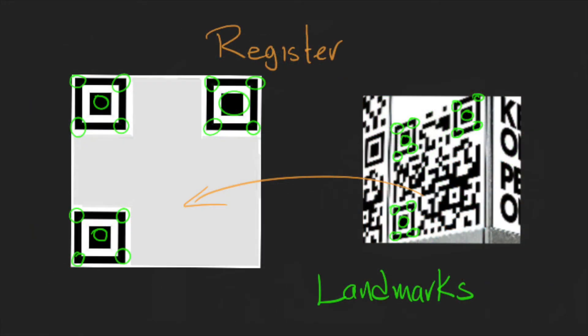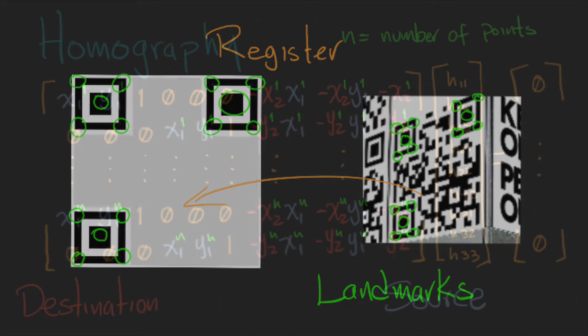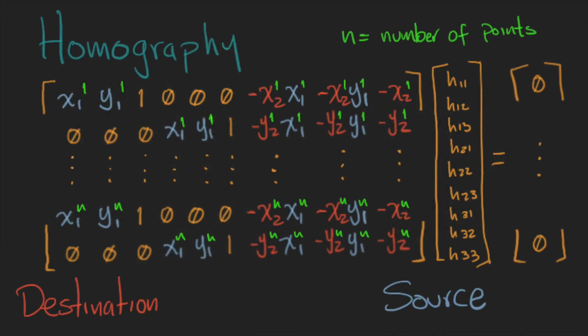More than 8 points is a safe number. Then in the middle we have a vector of parameters, and all of this is equal to 0.